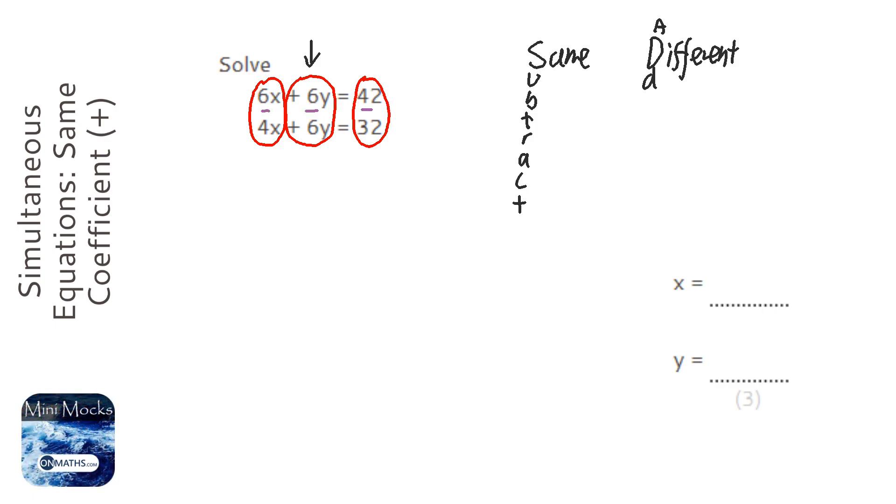We're going to subtract downwards, so 6x take away 4x is 2x. 6y take away 6y, well that's 0, and the whole point of this is to get rid of one of the letters.